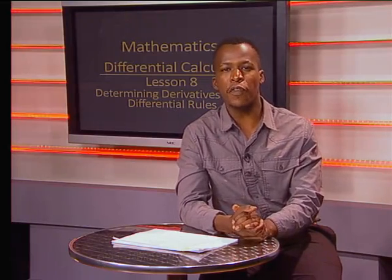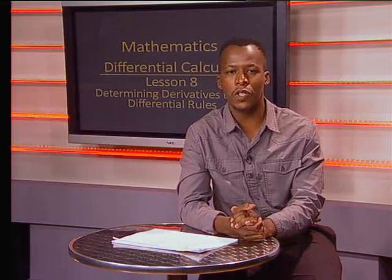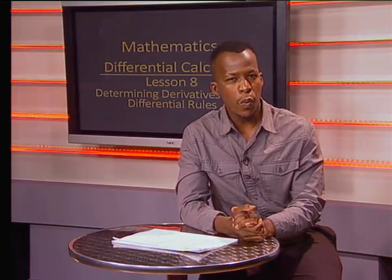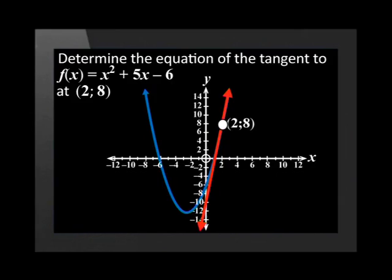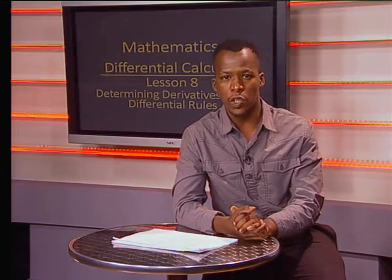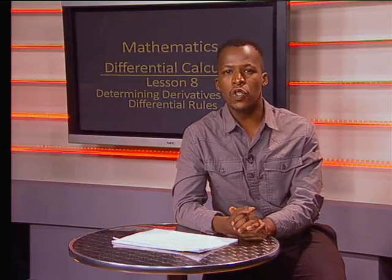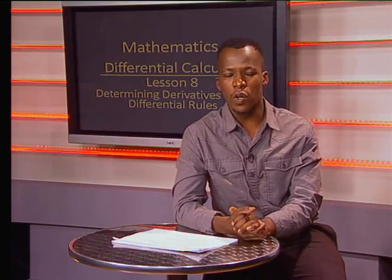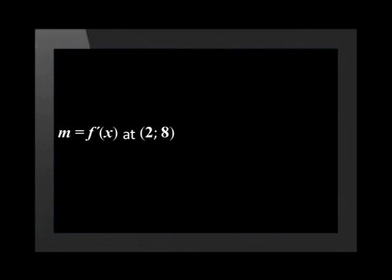Determining the derivative by using differential rules is important in the application of calculus. In the next example, we will see how the derivative is applied in determining the equation of a tangent to a curve. Determine the equation of the tangent to the curve f of x equal to x squared plus 5x minus 6 at the point 2 and 8. A tangent is a straight line. In order to determine the equation of a straight line, we need two points on the line or one point and the gradient of the line. We are given the point (2, 8), so let's determine the gradient of the tangent. The gradient of f of x is equal to the derivative of f of x at the point 2 and 8.